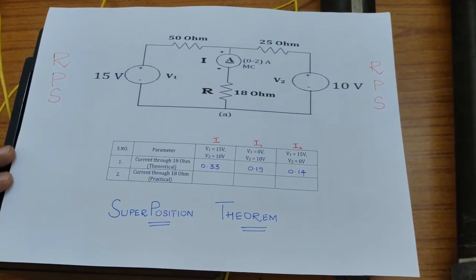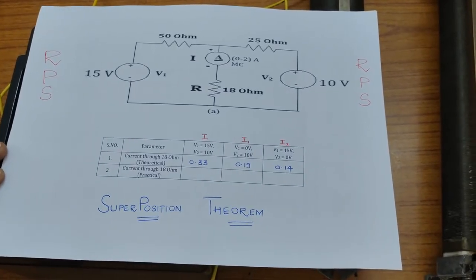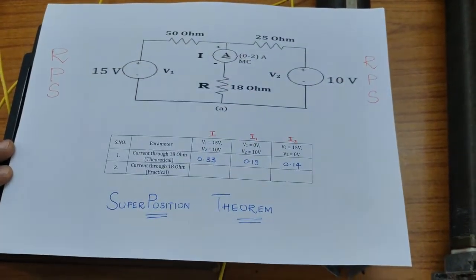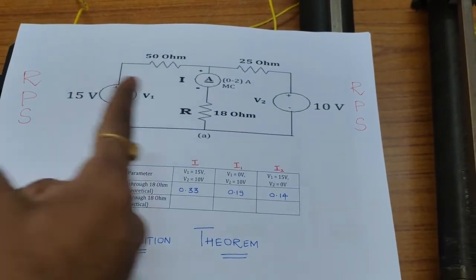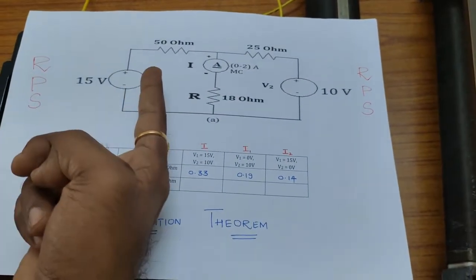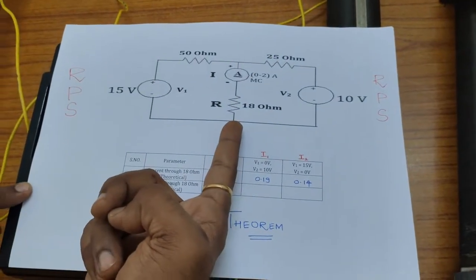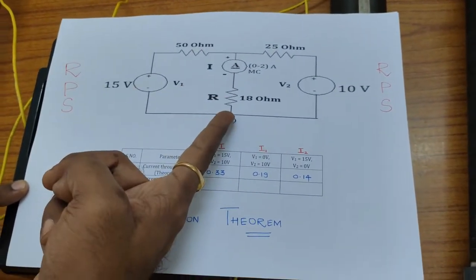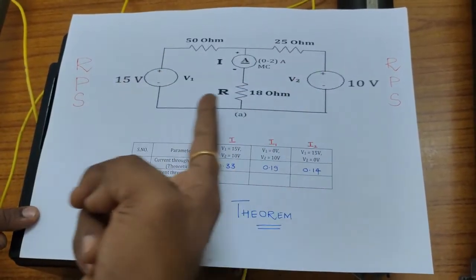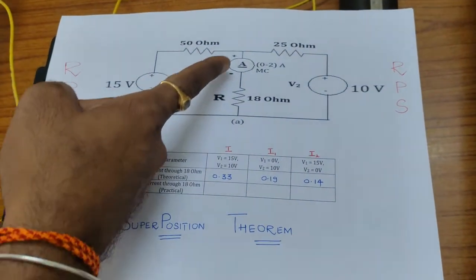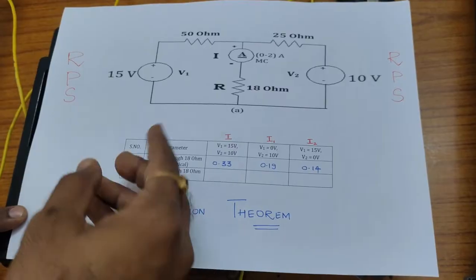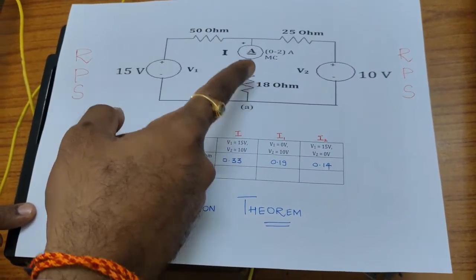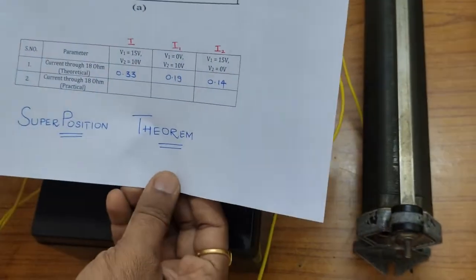Now we go to the practical session. Today, we are going to conduct an experiment — the experiment name is superposition theorem. We have to verify this circuit. The components are: a 15 volt supply from a regulated power supply, a 10 volt supply from another regulated power supply, and three resistors: 50 ohms, 25 ohms, and 18 ohms. We have to measure the current across the 18 ohms resistor. The ammeter has to be connected in series with the 18 ohms in order to observe this current.